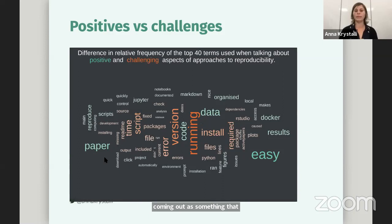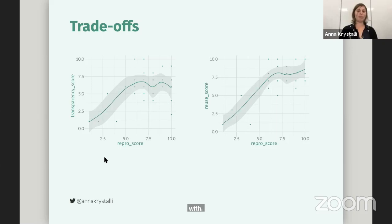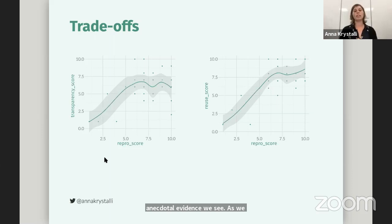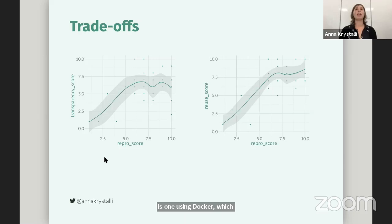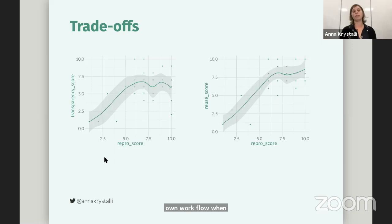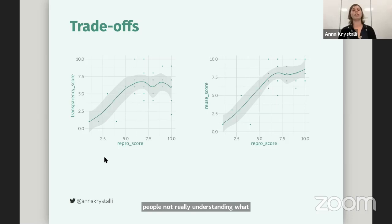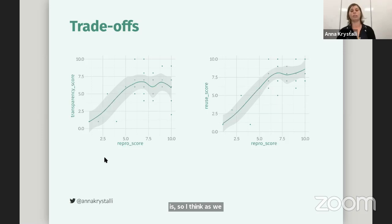I know this isn't a super robust statistical analysis, but I did want to show this plot because it links into some anecdotal evidence — as we approach higher reproducibility with our current tools, there might be a trade-off between other aspects like transparency and reuse. I think what this relates to is using Docker: yes, you can reproduce the paper, but it's harder to merge stuff into your own workflow when things are packaged in Docker. And in terms of transparency, if we make it super automated so there's one command that runs and you get your PDF, often that leaves people not really understanding what happened underneath and where the code that does different bits is. And finally, one of the biggest findings is that ReproHacks are actually fun — we got really good feedback from participants. They really enjoy the low pressure environment, and they find them a great opportunity for peer skill sharing.